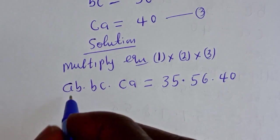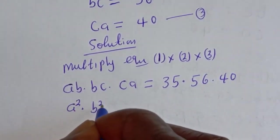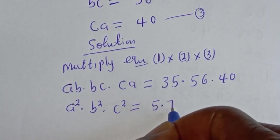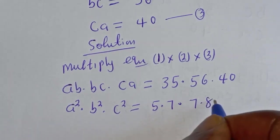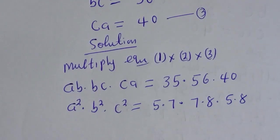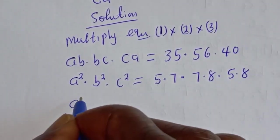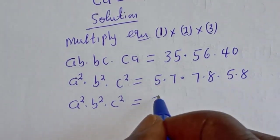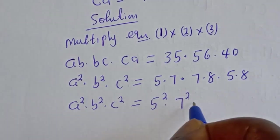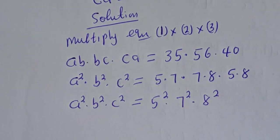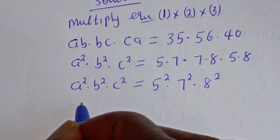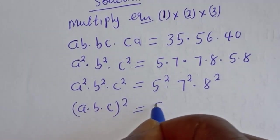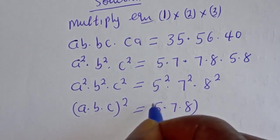This gives us A² multiplied by B² multiplied by C² is equal to 35 — which is 5×7 — multiplied by 56 — which is 7×8 — multiplied by 40 — which is 5×8. Grouping the factors: we have 5² multiplied by 7² multiplied by 8². This can be written as (A×B×C)² is equal to (5×7×8)².